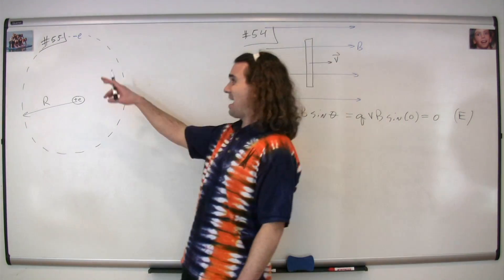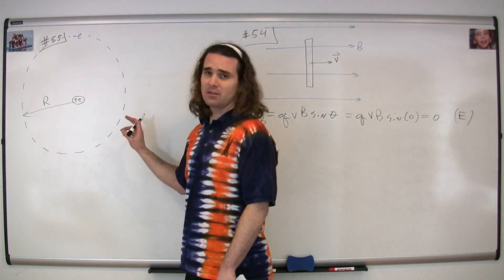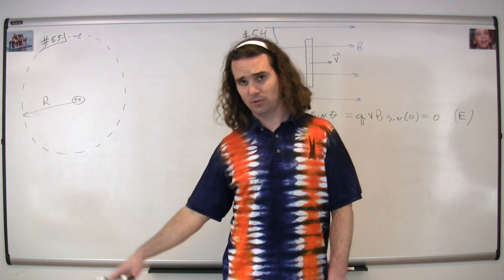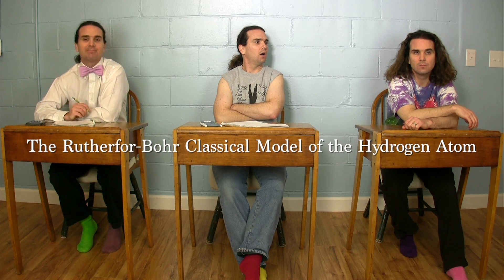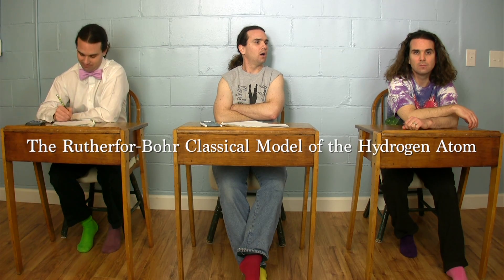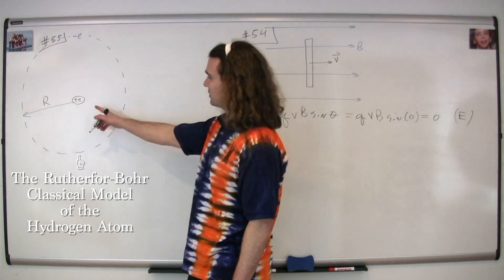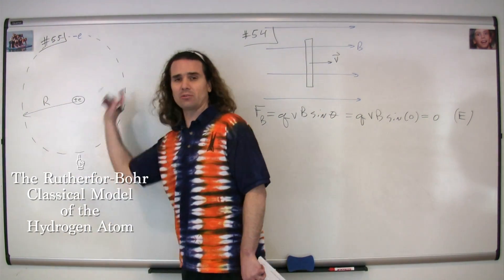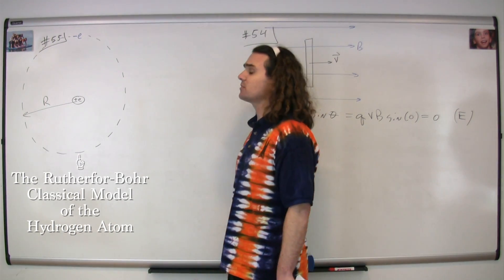Question number 55: we have an electron in orbit at a constant radius around a proton — say hello to the hydrogen atom. More specifically, the Rutherford-Bohr classical model of the hydrogen atom. We assume that the proton is stationary and that only electrostatic forces act on the two-particle system.